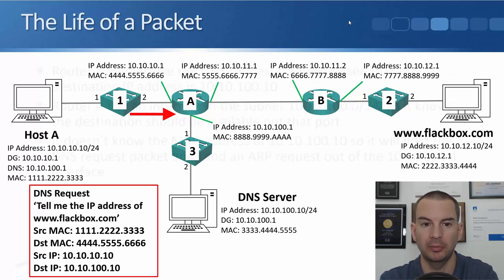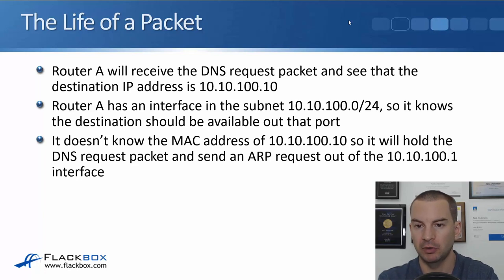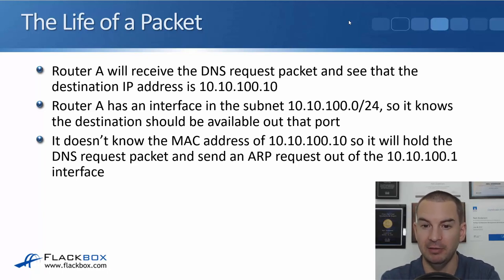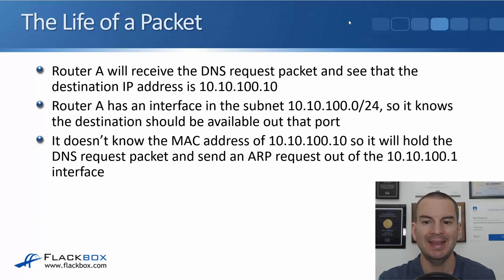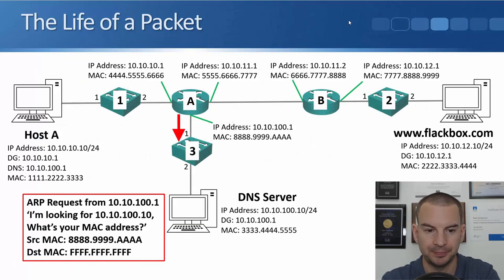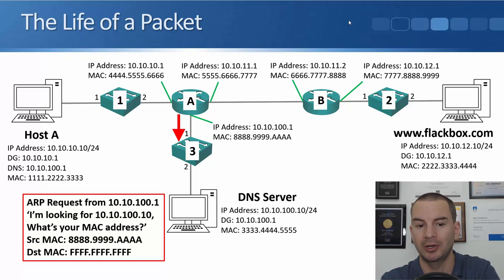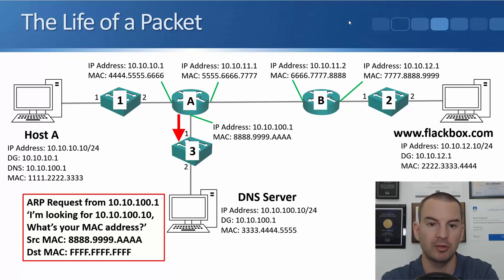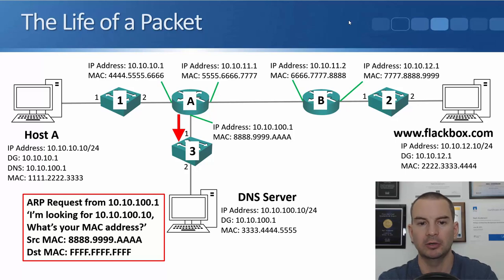The DNS request arrives at Router A, which sees the destination IP is 10.10.100.10. Router A has an interface in the 10.10.100.0/24 subnet, so it knows the destination should be available out that port. However, it doesn't yet know the MAC address of 10.10.100.10, so it holds the DNS request and sends an ARP request out of the 10.10.100.1 interface. That ARP request comes from 10.10.100.1 with source MAC 8.9.a, asking for the MAC address of 10.10.100.10, with destination MAC f.f.f as the layer 2 broadcast.